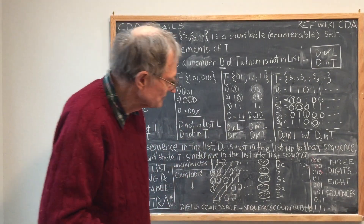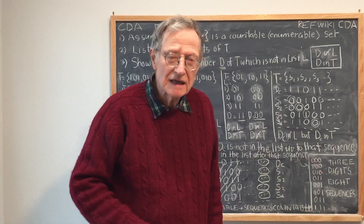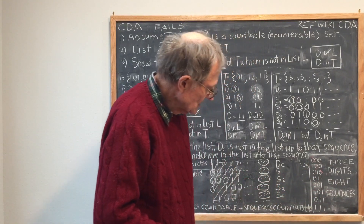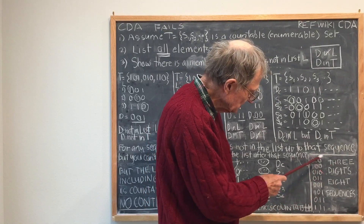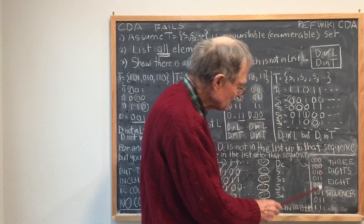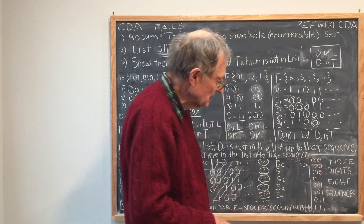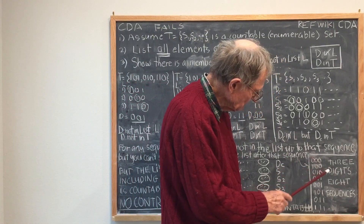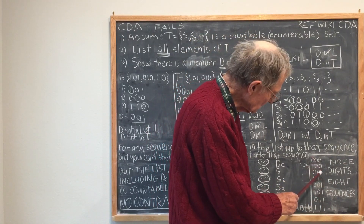But the list is never square because there are more elements than there are digits in the element. For example, for three digits, three digits give rise to eight sequences: 0,0,0; 1,0,0; and so on down the line. So three digits give rise to eight sequences, meaning the list is not square. So if I try to work with this list and create the diagonal element D, I'd be able to create the first place, the second place, and the third place, but then I can't go any further because my diagonal elements end there.